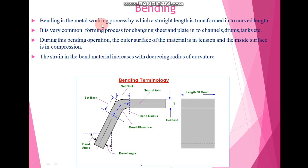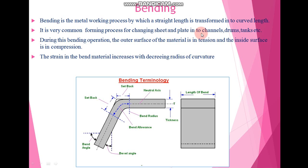Bending is the metal working process by which we can convert the straight length into the curved length. It is a very common forming process. Basically, bending belongs to the forming process, and in forming process we change the sheet and plate into channels, drums, and dies. With the help of this bending process we can change a straight sheet and plate into channels, drums, and dies.